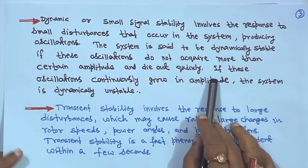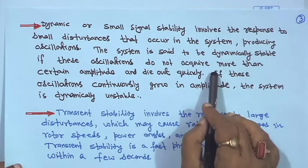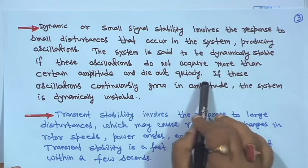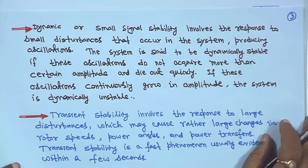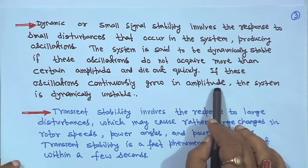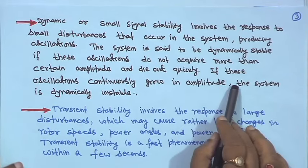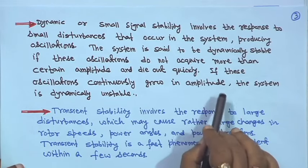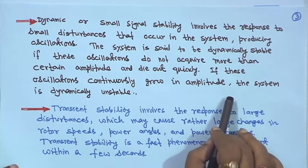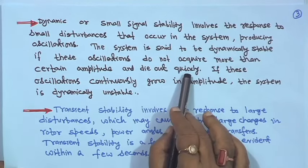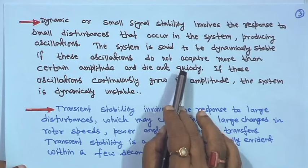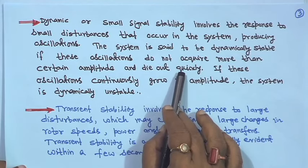Small signal stability involves huge analysis — we will not study this one. It involves huge analysis for the synchronous machine, and to damp out oscillations due to small disturbances such as a step increase in mechanical torque, there will be continuous oscillation. To damp out those oscillations, a commonly used device is the power system stabilizer — a lead-lag stabilizer. We will not study small signal stability analysis, as it requires detailed analysis of synchronous machine dynamics.